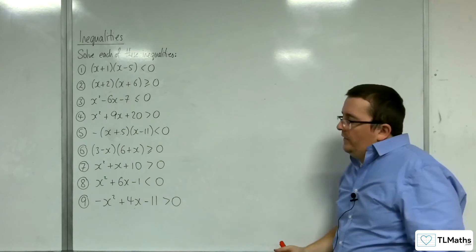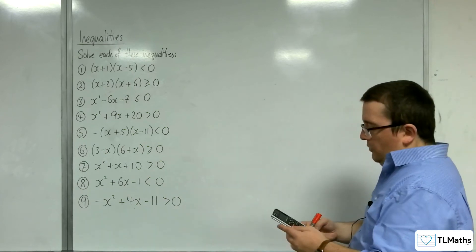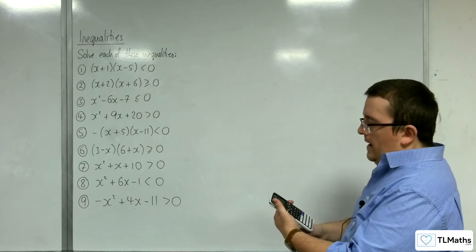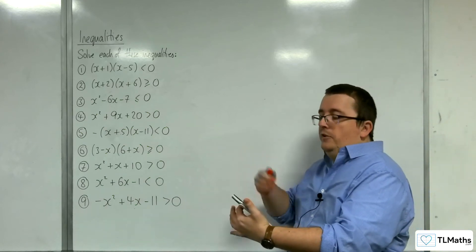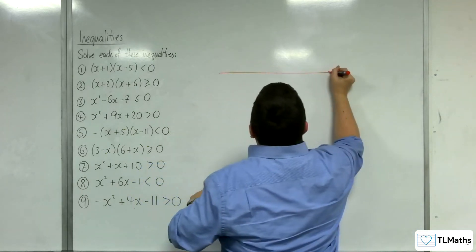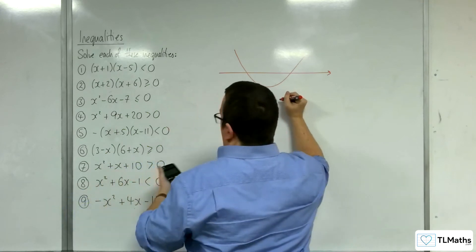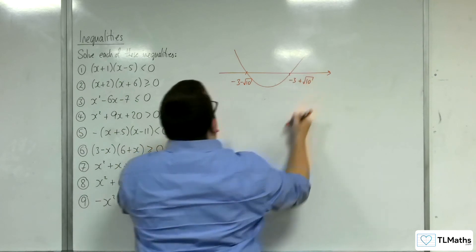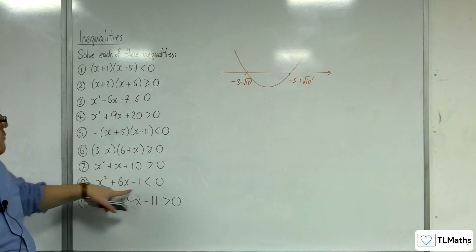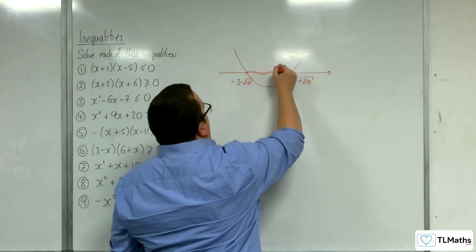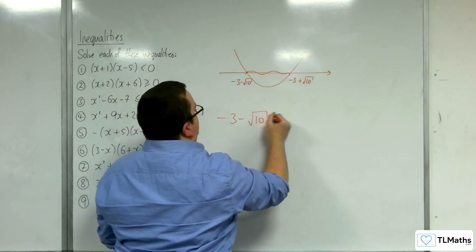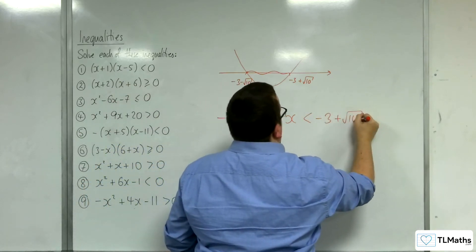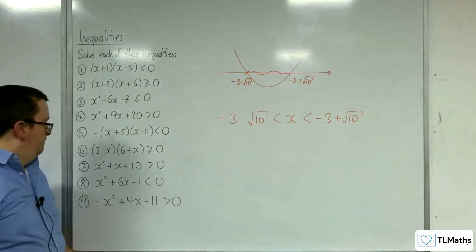Number eight: x² + 6x − 1 < 0. Using the quadratic solver with coefficients 1, 6, −1 gives x = −3 ± √10, so there are real solutions. It's a positive parabola crossing at −3 − √10 and −3 + √10. Where is the graph below the x-axis? It's between those two roots, so −3 − √10 < x < −3 + √10.